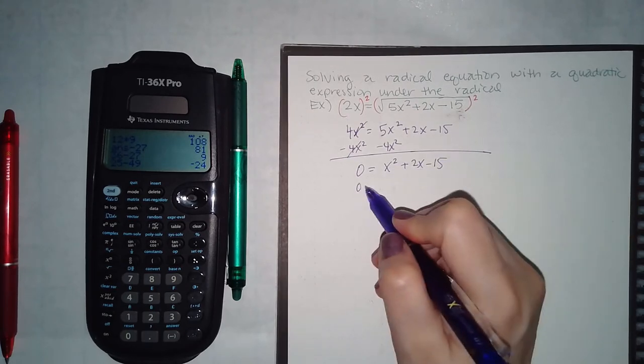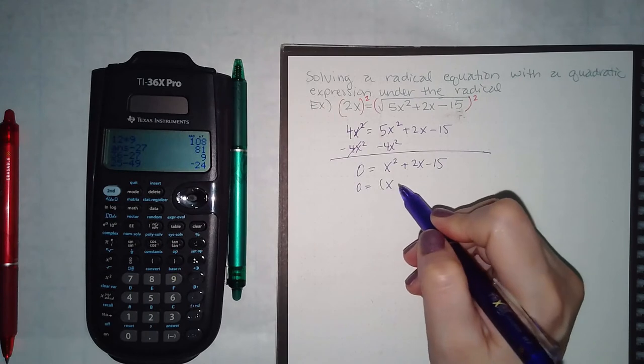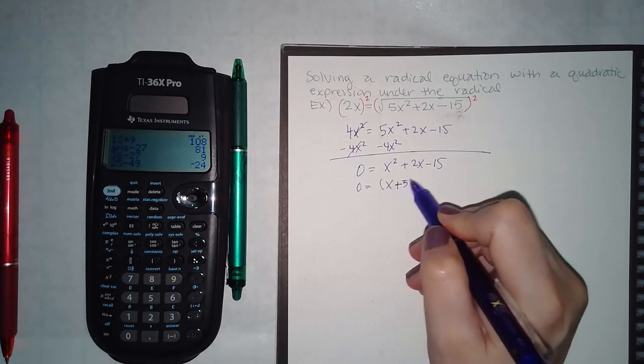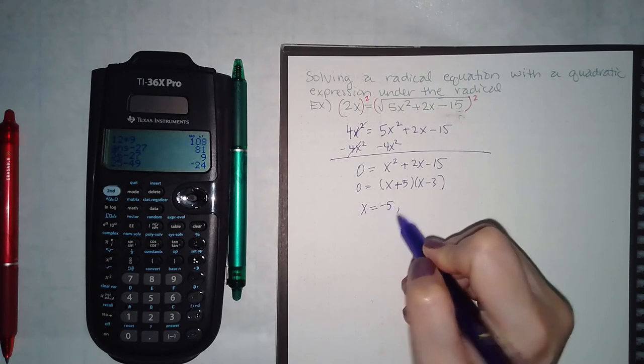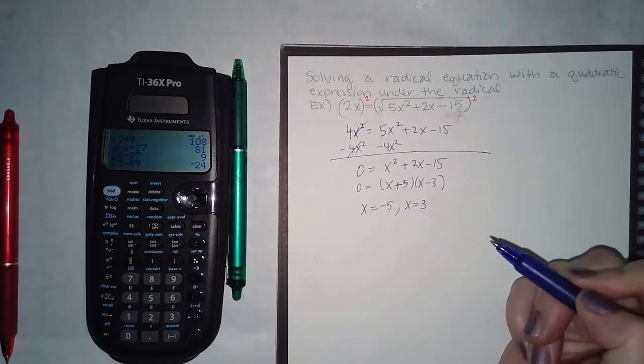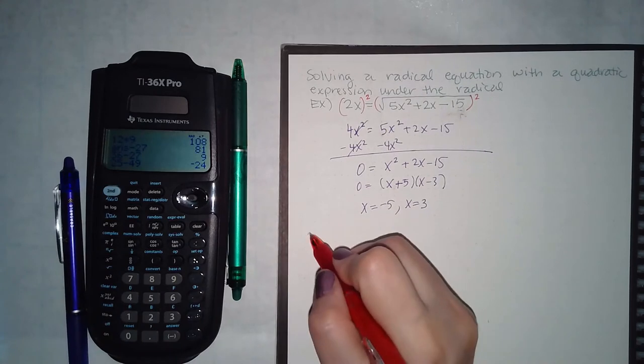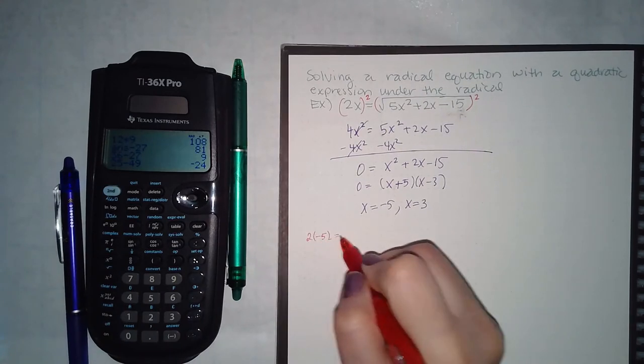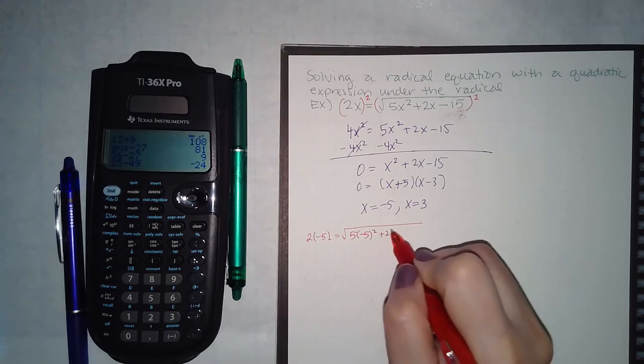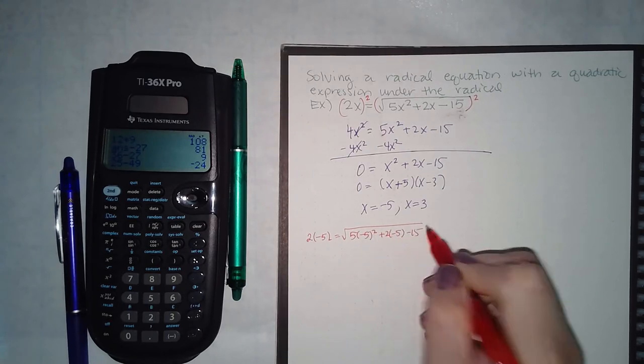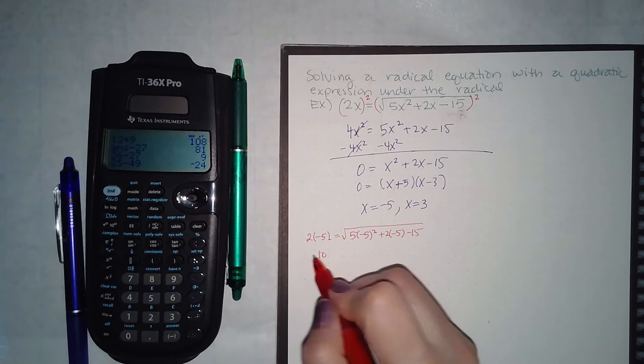So if I factor this, I get plus 5 and minus 3. So x equals negative 5 and x equals 3, and again we have to check both answers.